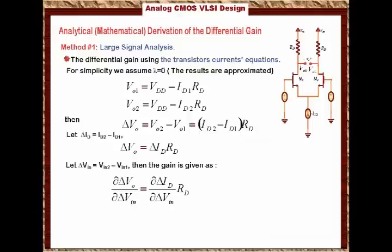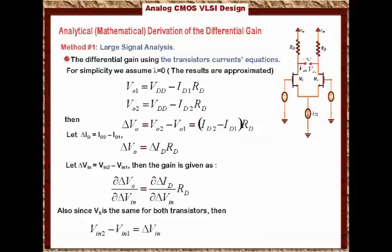But also we know that the source Vs is the same for both transistors. Since Vs is the same for both transistors, then we can say that VN2 minus VN1, which is basically the differential input voltage ΔVN, is nothing but Vgs2 minus Vgs1, because the sources are the same.